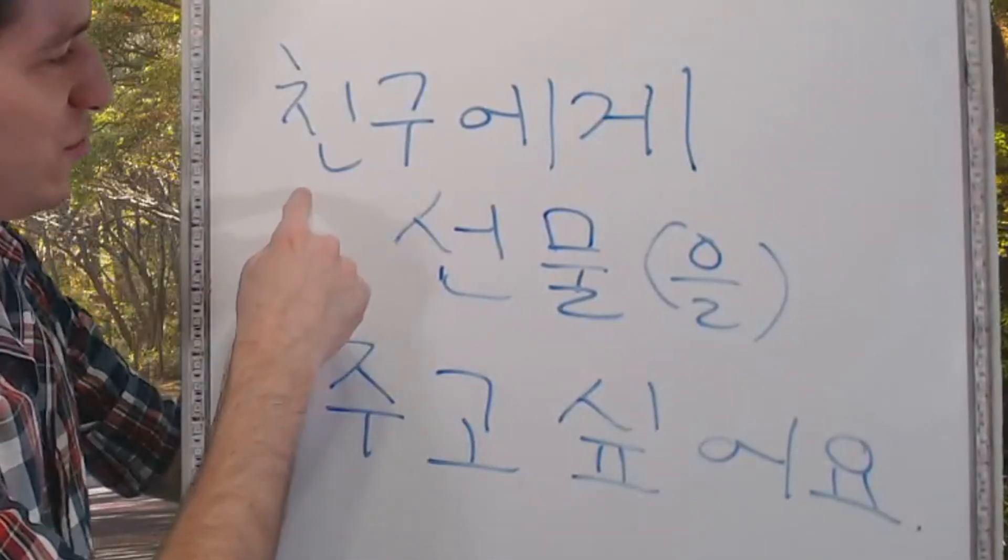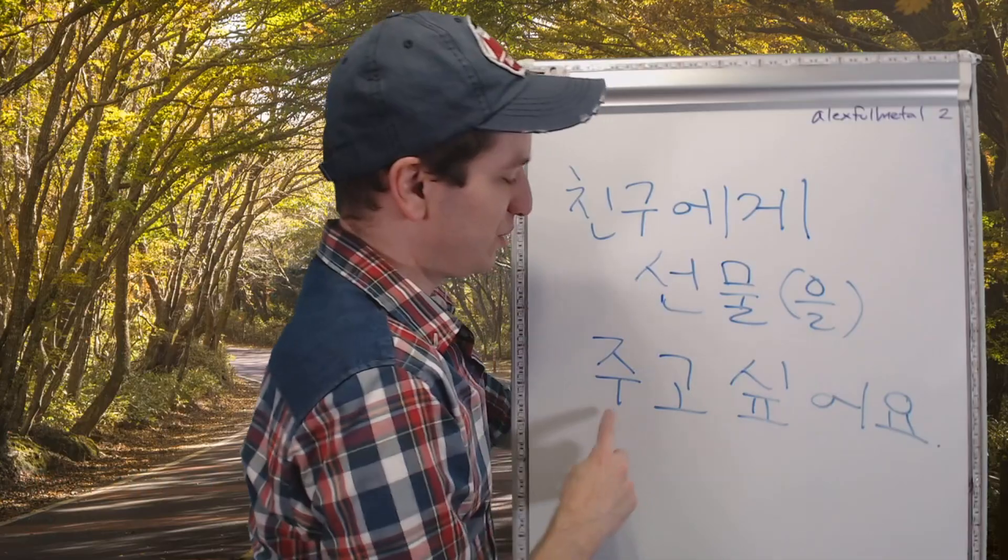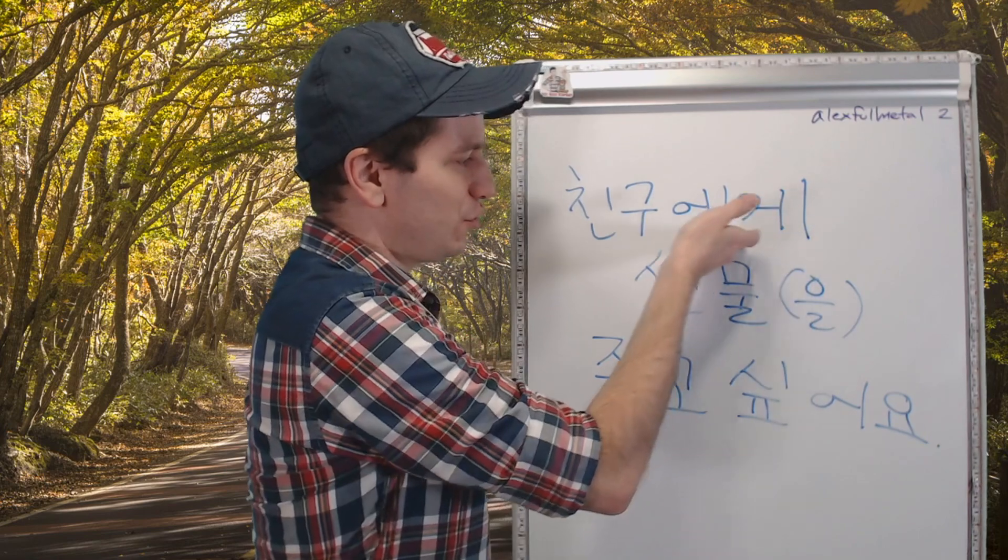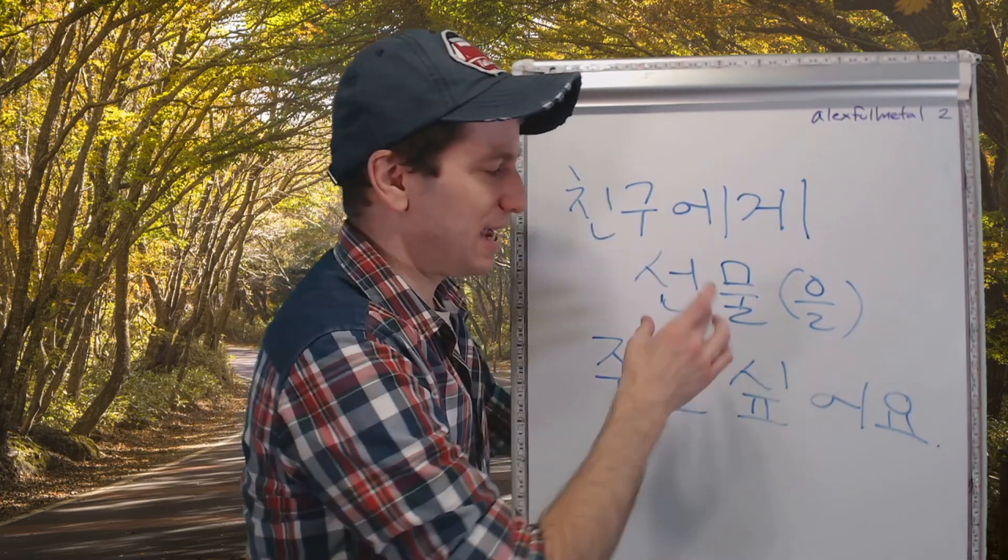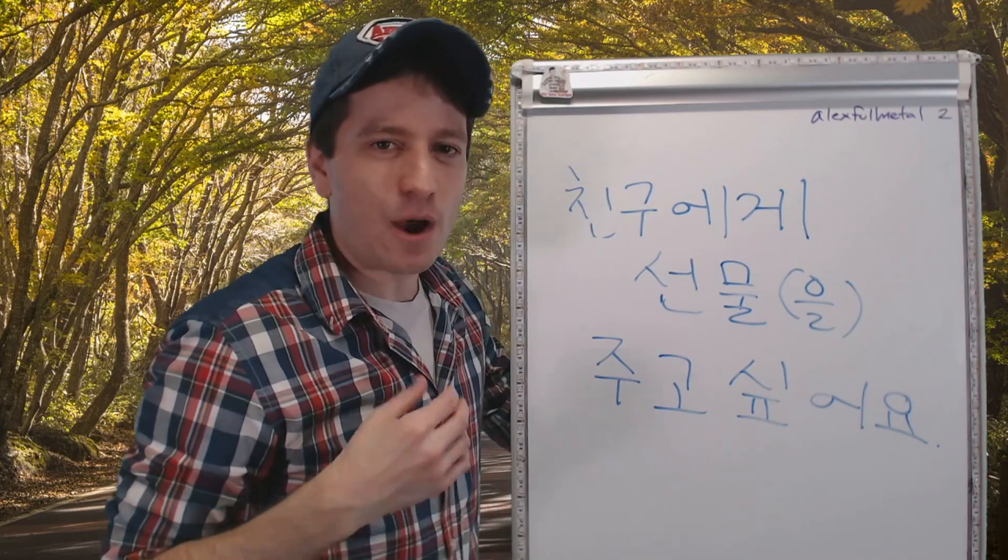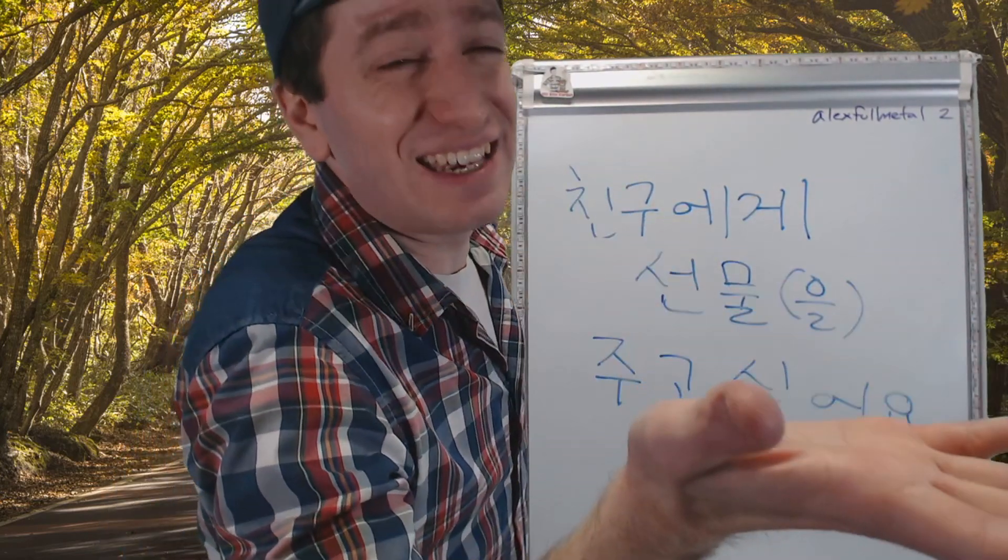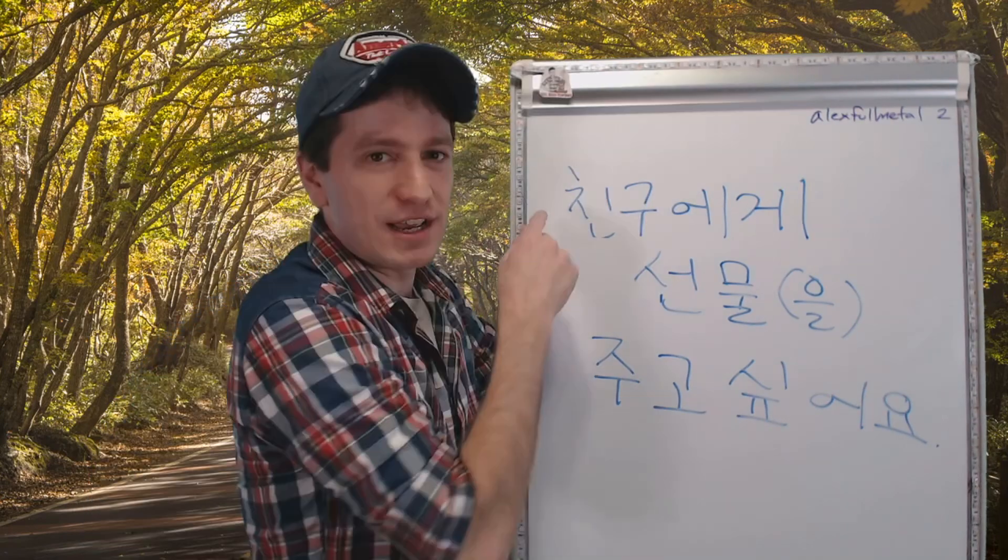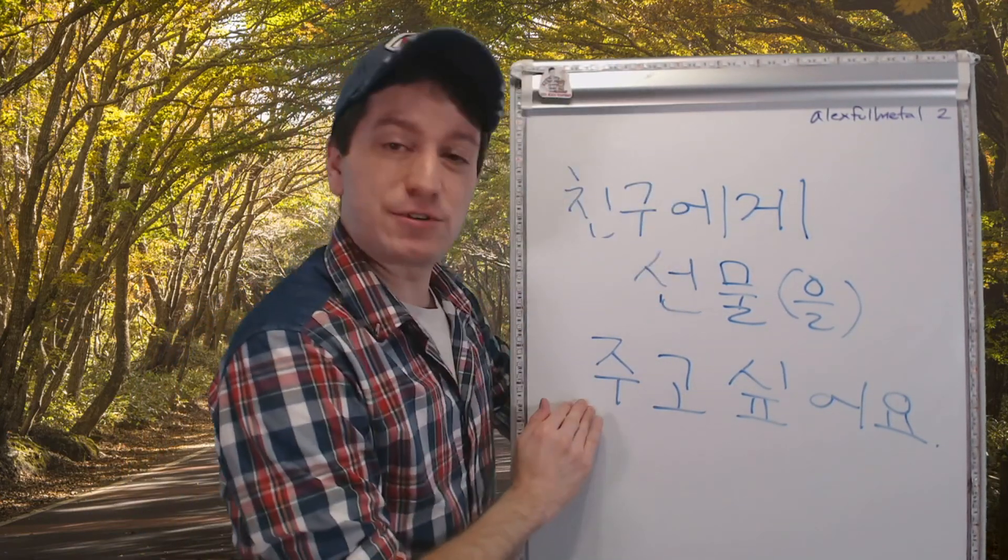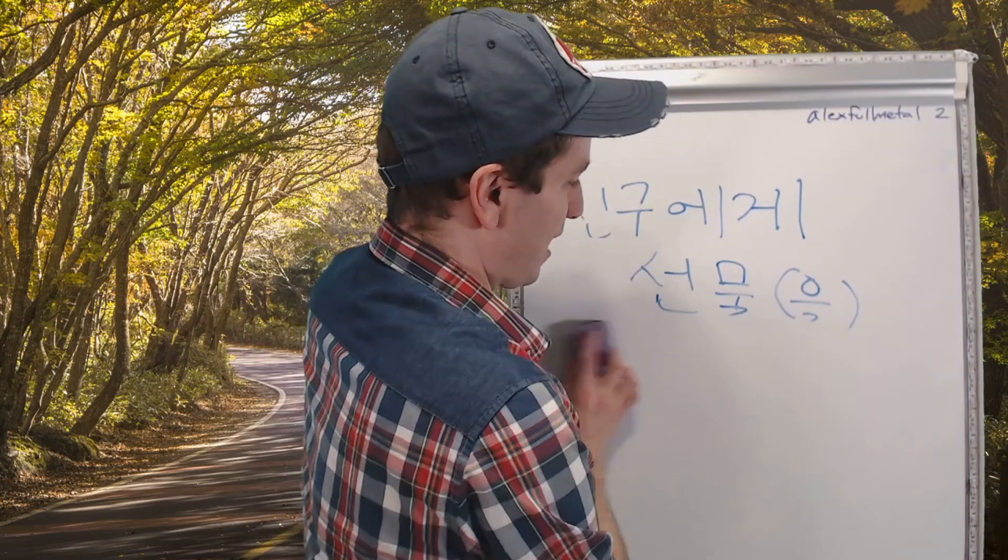So let's give another example. 친구에게 선물을 주고 싶어요. So I want to give a present to a friend. You could also say 선물을 친구에게 주고 싶어요. It would be like saying, I want to give a present to a friend. It's not going to be natural. So always use the object that you're doing directly before that verb.